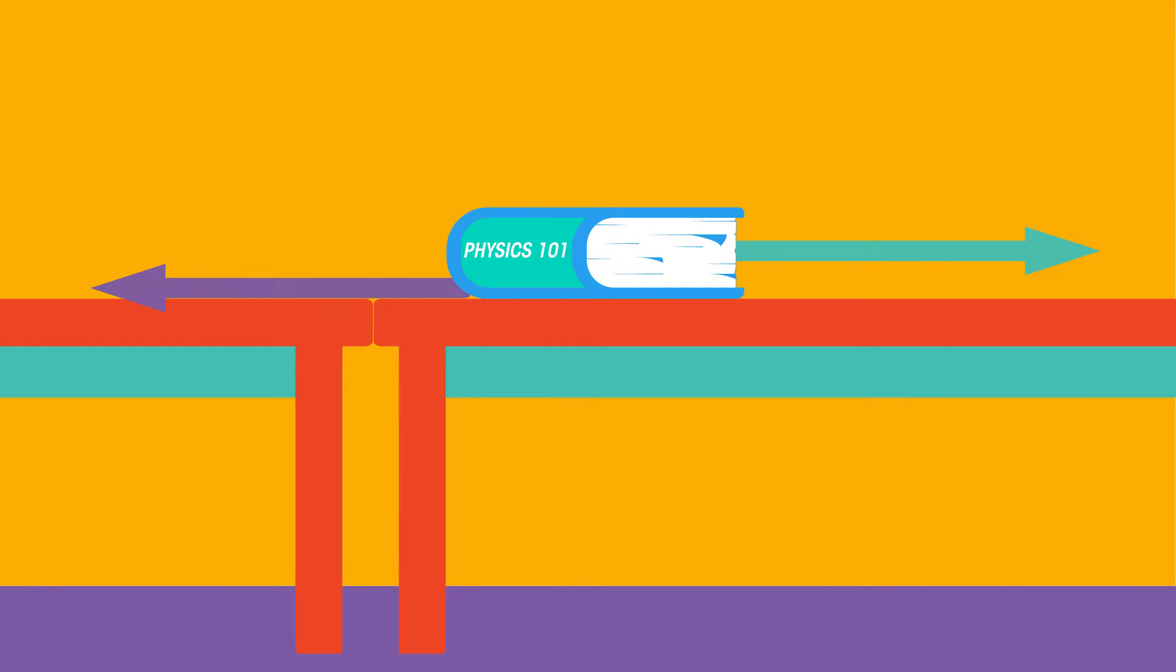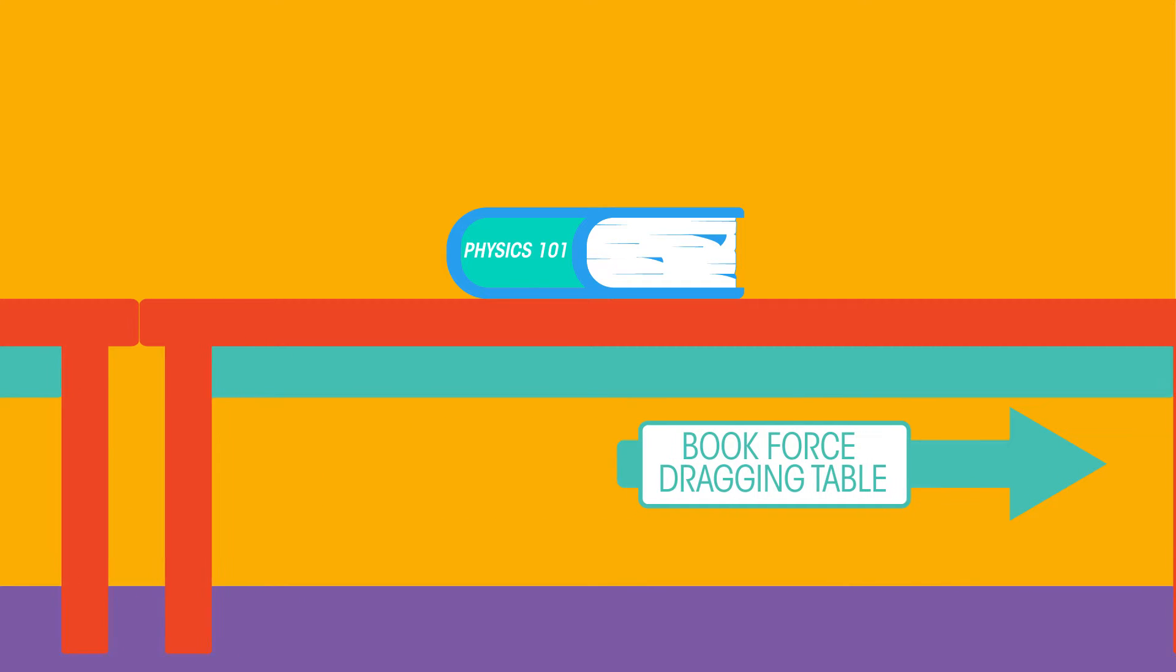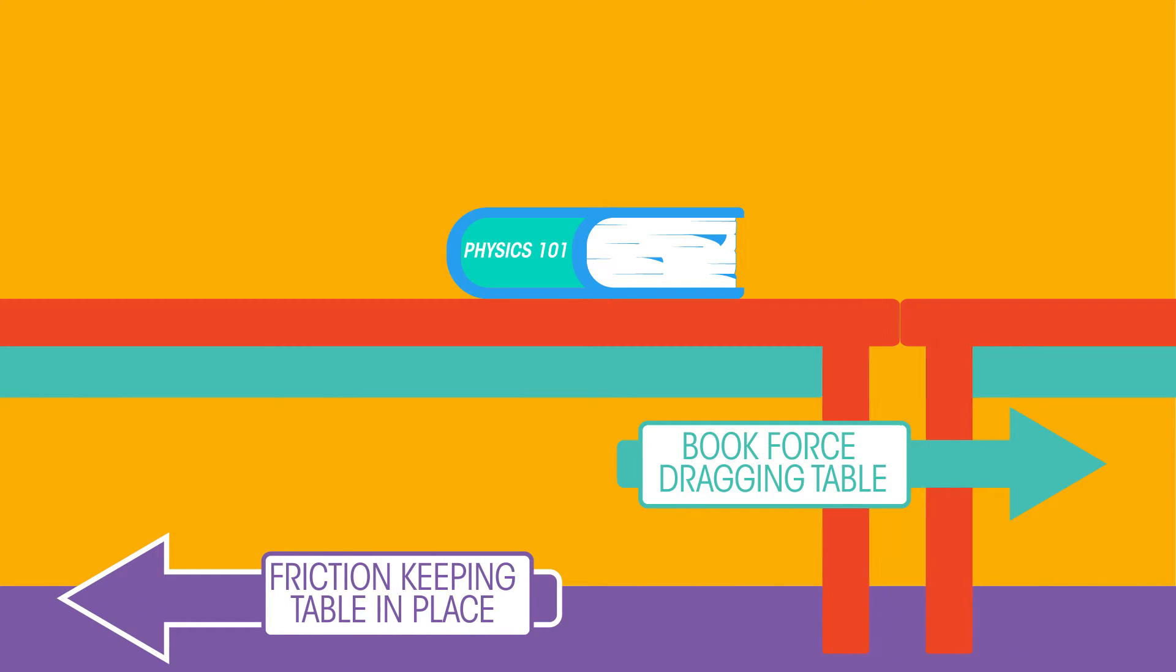There is another pair of horizontal forces acting here. The book is trying to drag the table as it is moved to the right, but the table is kept in place due to the opposing frictional force where the table legs touch the floor.